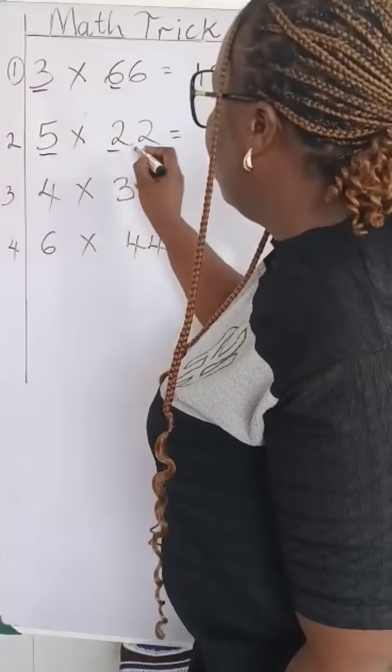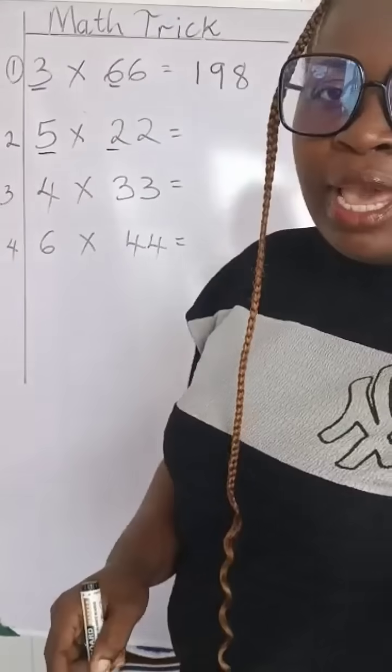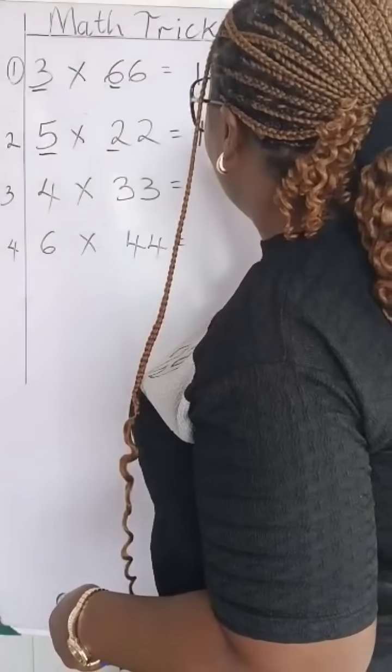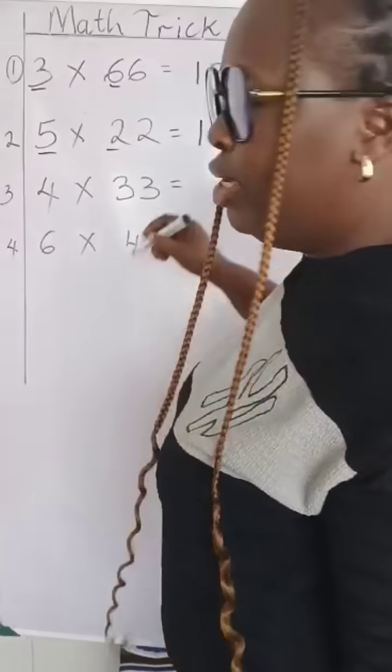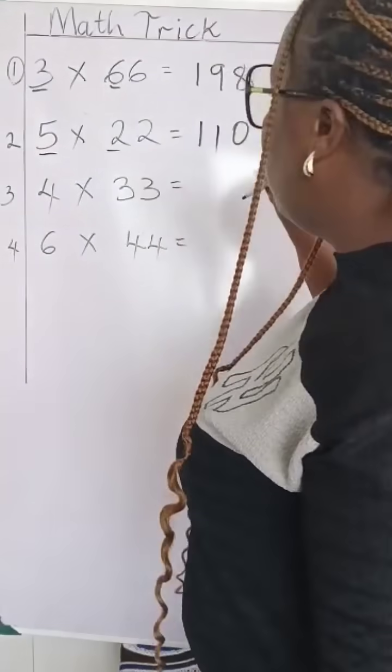We are going to still apply the same thing here. 5 multiplied by 2 is 10. We'll space it out. Then 1 plus 0 is 1. We'll have 110.